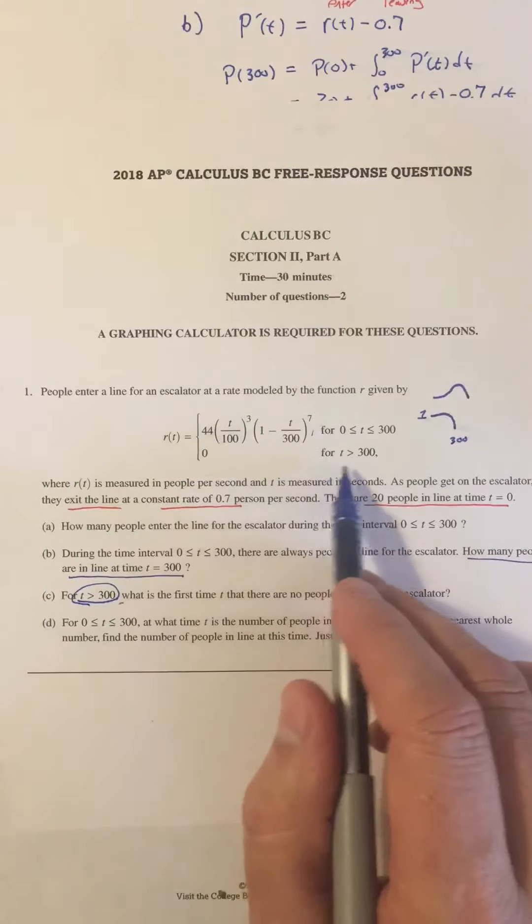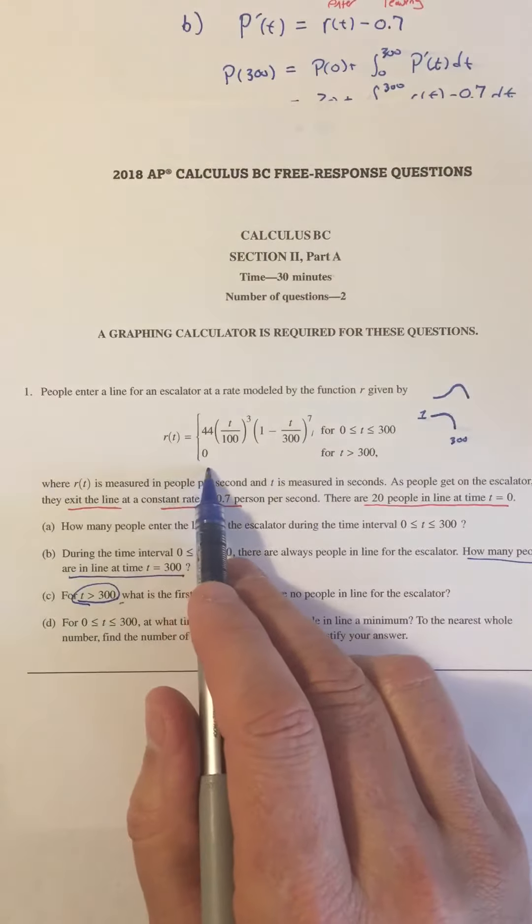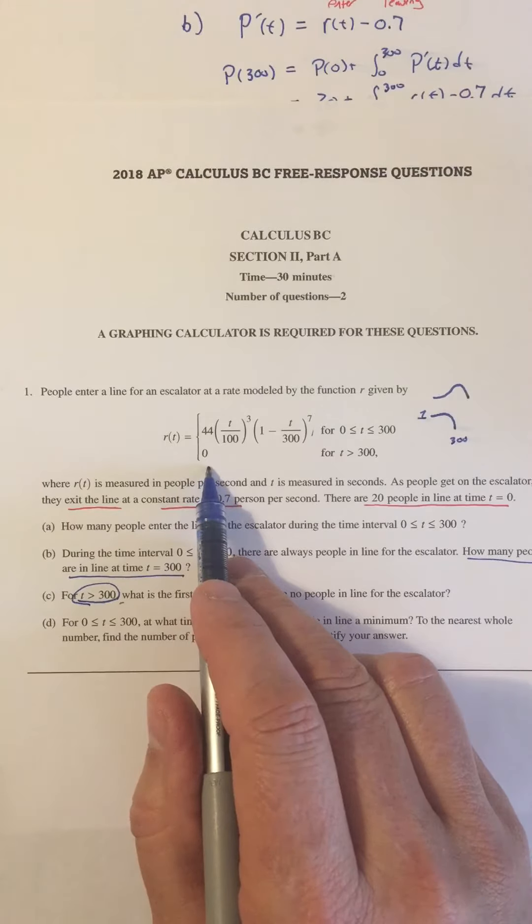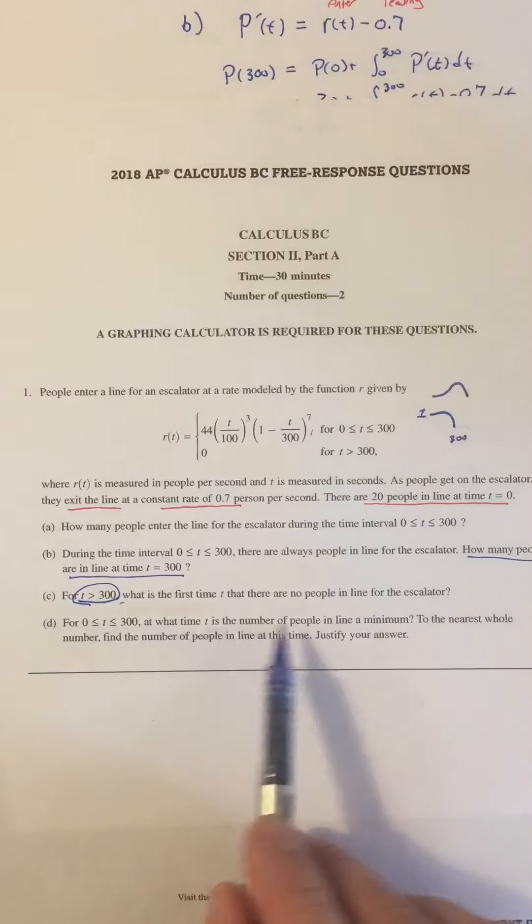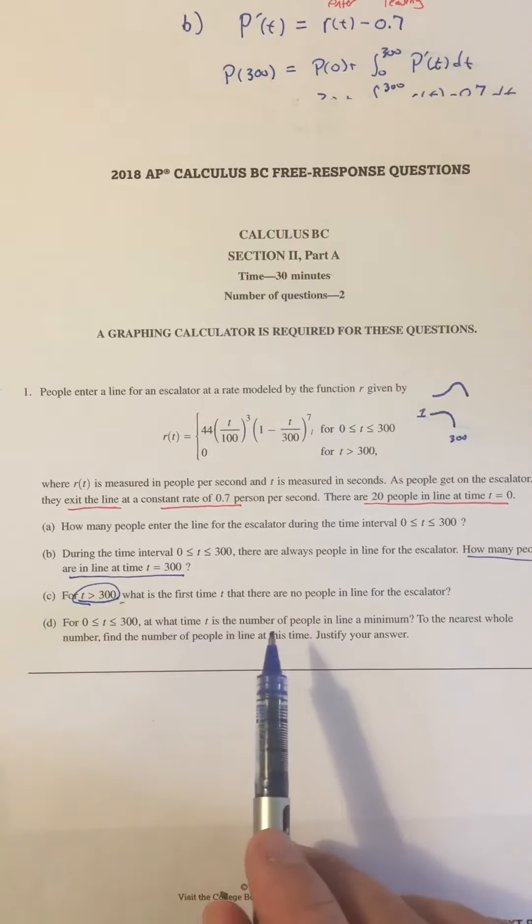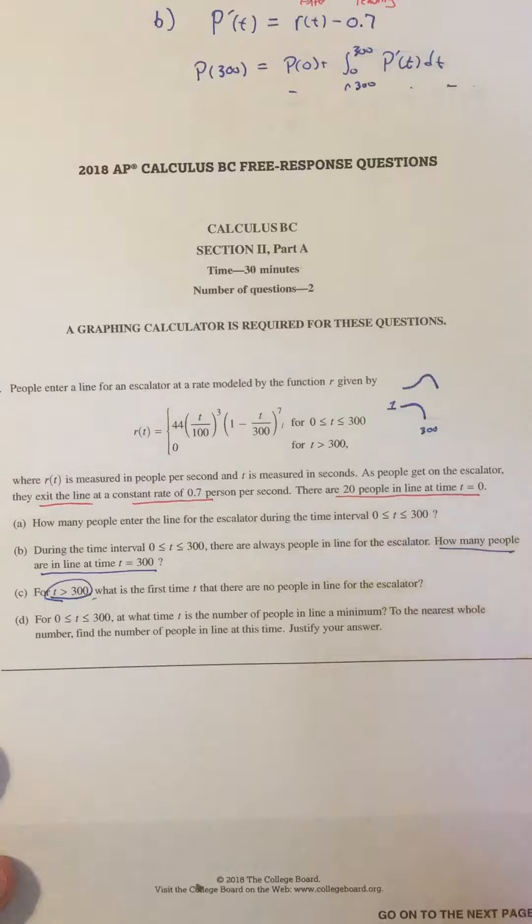So that means we're at this point where r of t is zero. So at time t equals 300, there's no more people getting in line. And really, if you think about this problem, there's actually no calculus in what they're asking you to do here. No calculus at all.